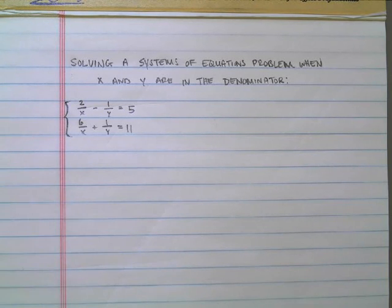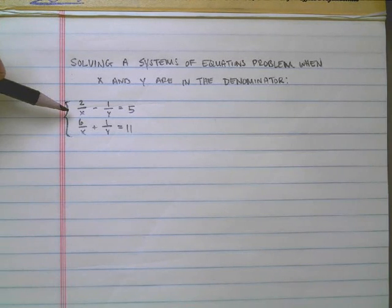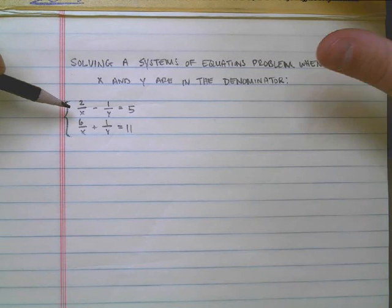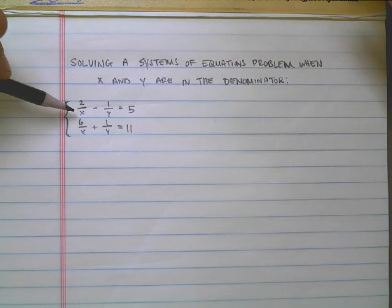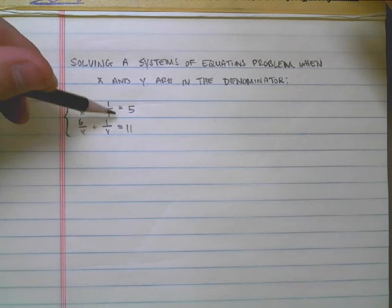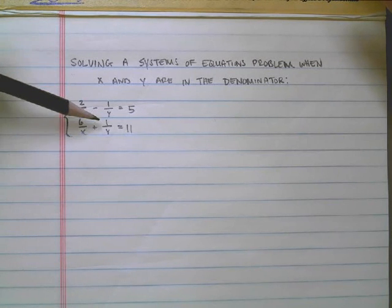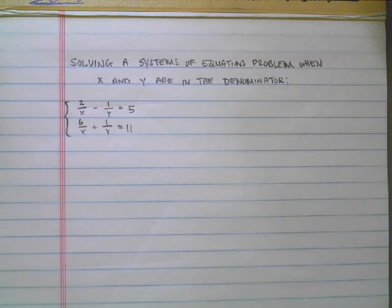The first thing is this: if we want to get rid of the fractions, which I think would be the first thing to do, all we have to do is get the common denominator here, which would be xy, x times y. And if we multiply each term by the common denominator, that'll get rid of the fraction. They'll all cancel out and go away.